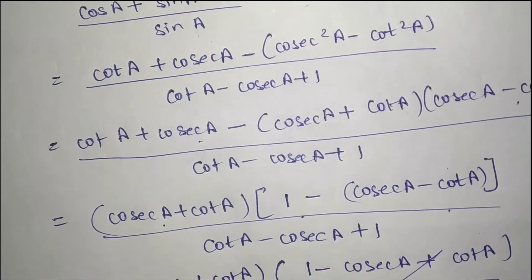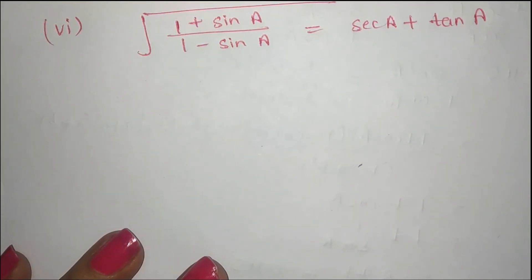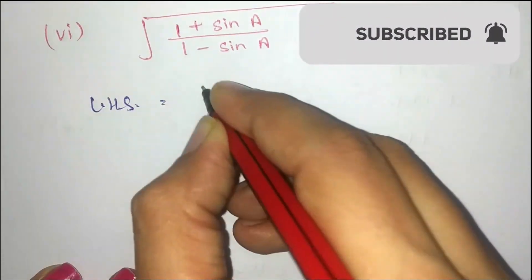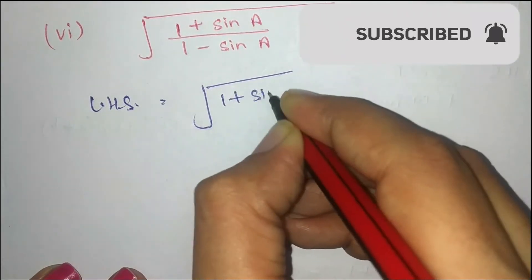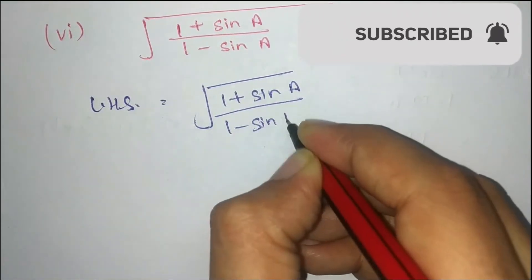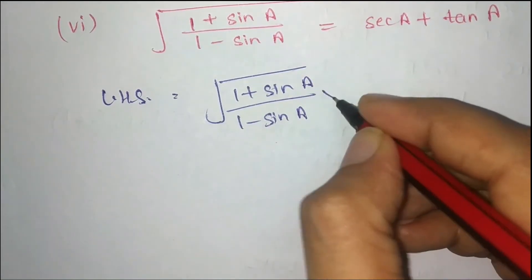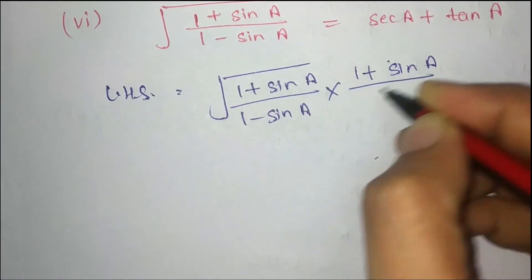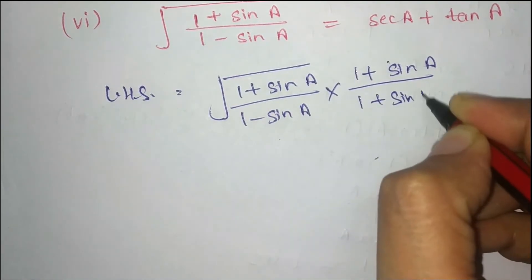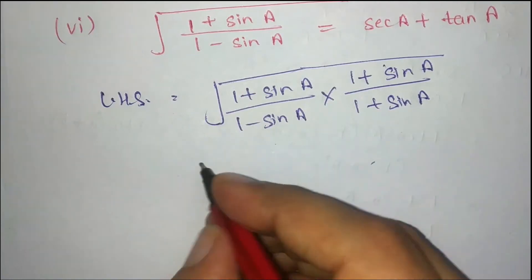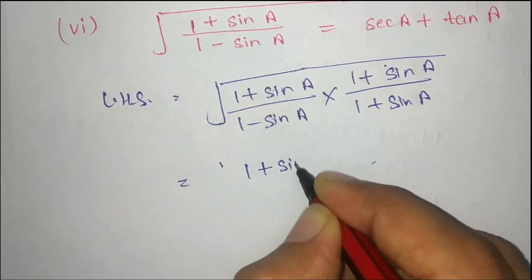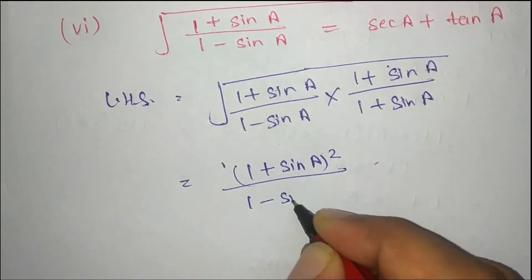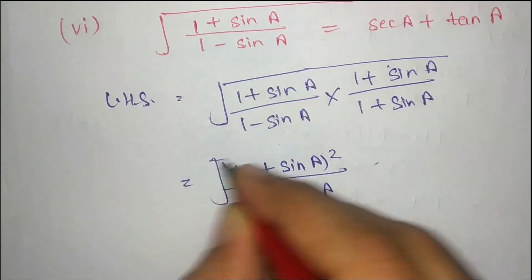Now this is our next question. We will take the left hand side, which is √((1 + sin a)/(1 minus sin a)). To simplify, we will rationalize by multiplying by √(1 + sin a) over √(1 + sin a). This gives us (1 + sin a)² in the numerator and (1 minus sin²a) under the root in the denominator.